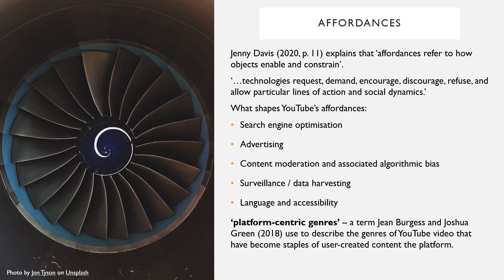What about content moderation and associated algorithmic bias — how does this enable and constrain? YouTube content is moderated using both human evaluation and automated screening, both of which can reproduce cultural biases such as racism, sexism, and homophobia. What about surveillance or data harvesting? What about language and accessibility — who can access the content and who can't? We also need to contextualize content on the site in light of its own history, for example how videos conform or don't conform to the platform-centric genres of YouTube — a term Jean Burgess and Joshua Green used to describe genres that have become staples of user-created content on the platform.